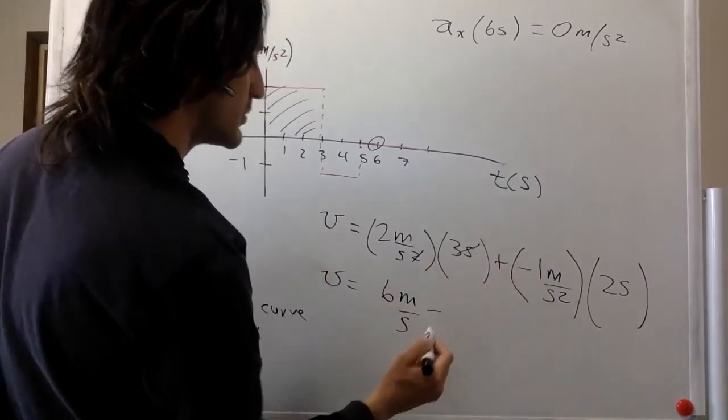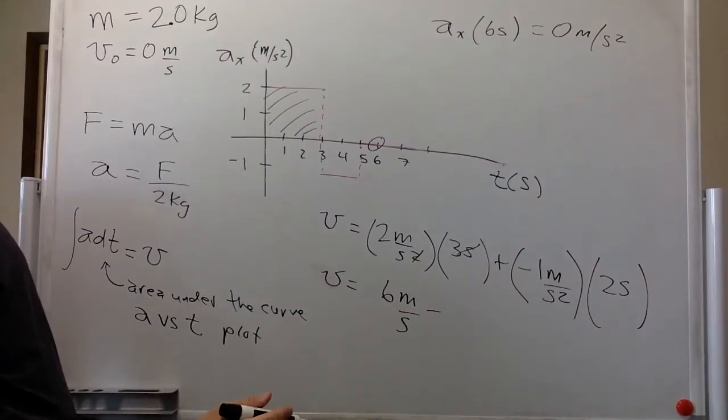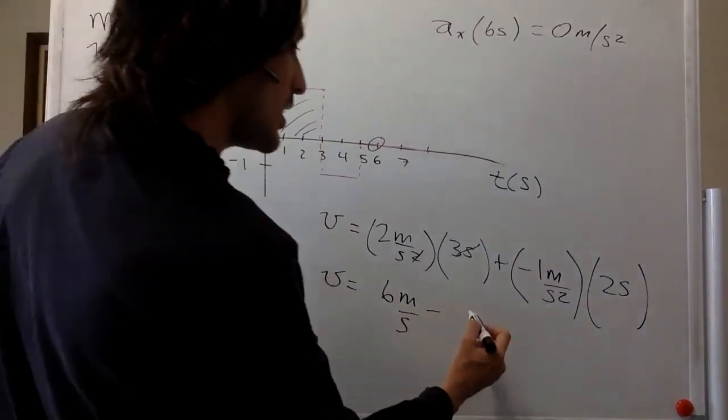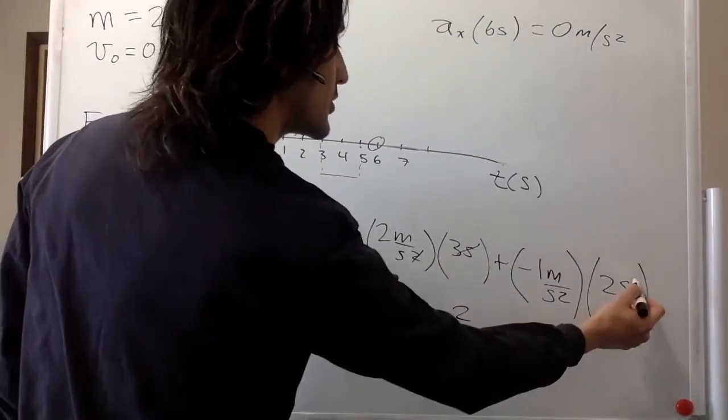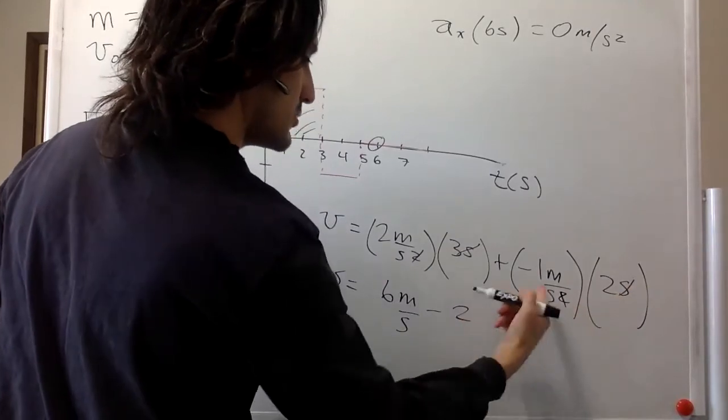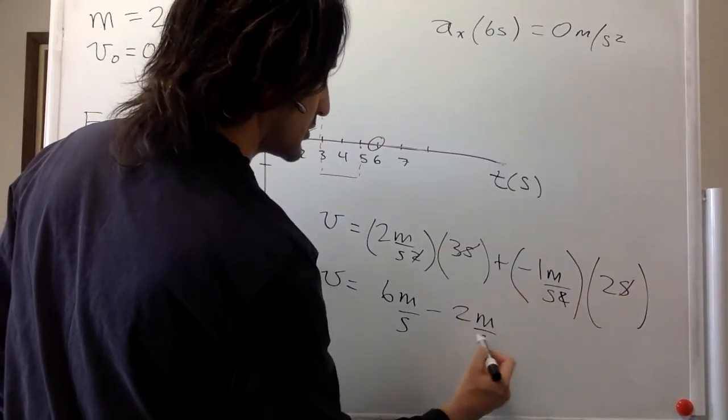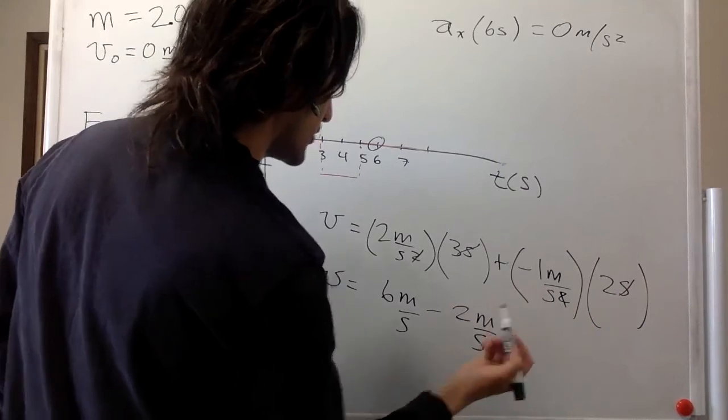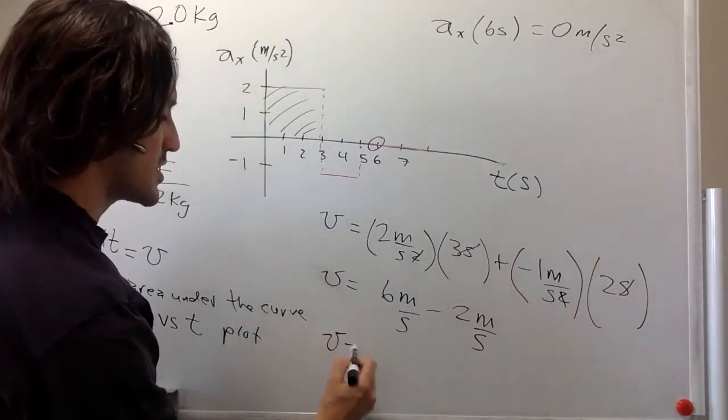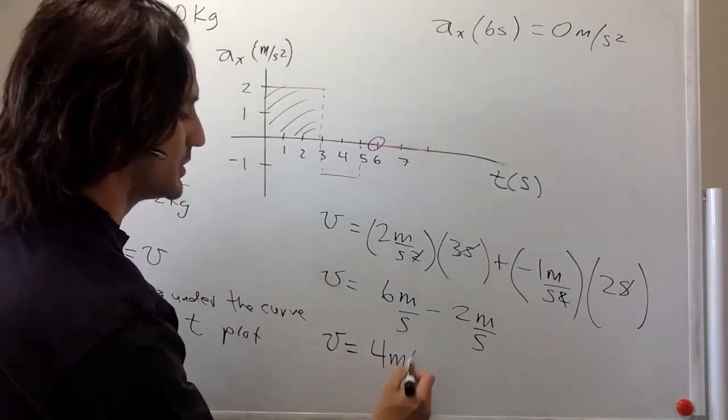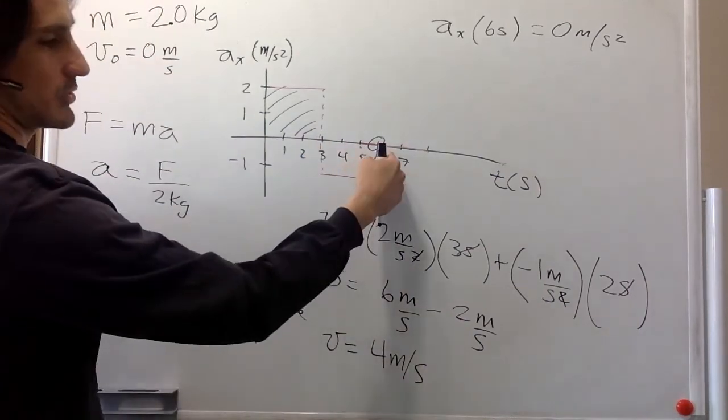Now you have a negative there, so minus 2 meters per second. And so the velocity is 4 meters per second at 6 seconds.